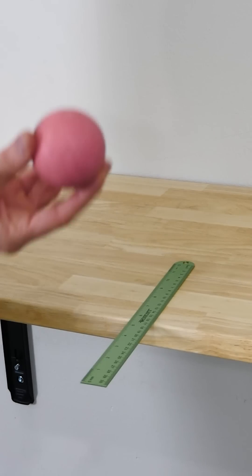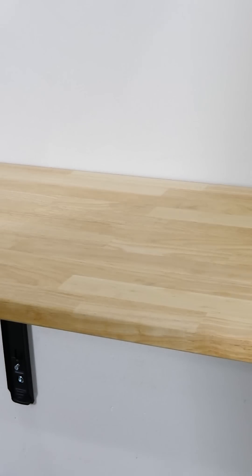So I have a regular ruler here. If I drop this bouncy ball on it, you can see it easily falls off.